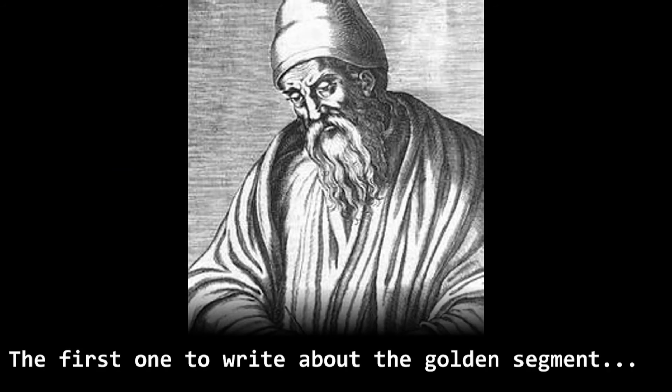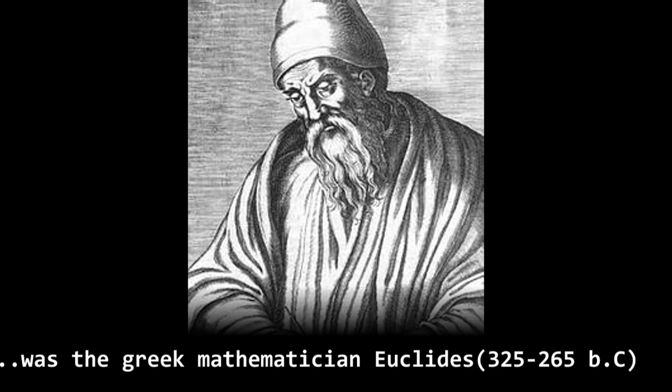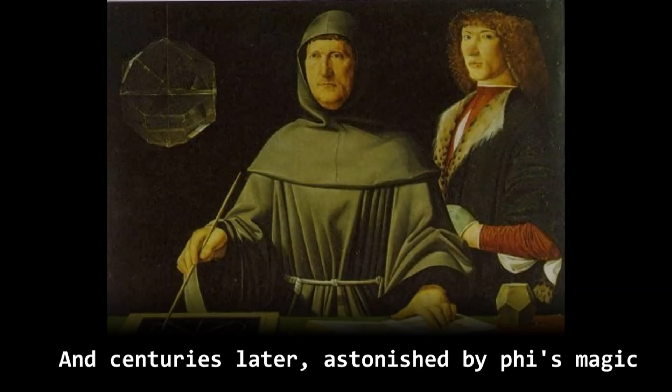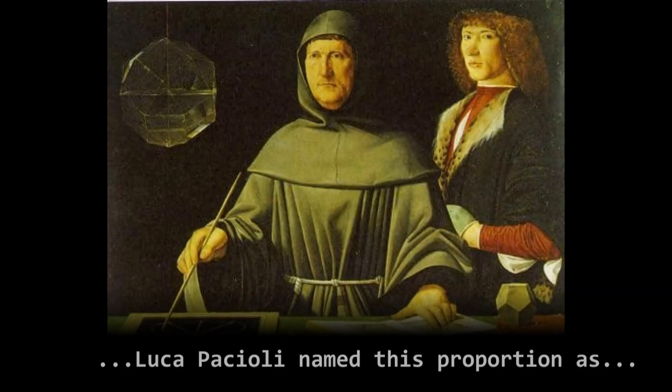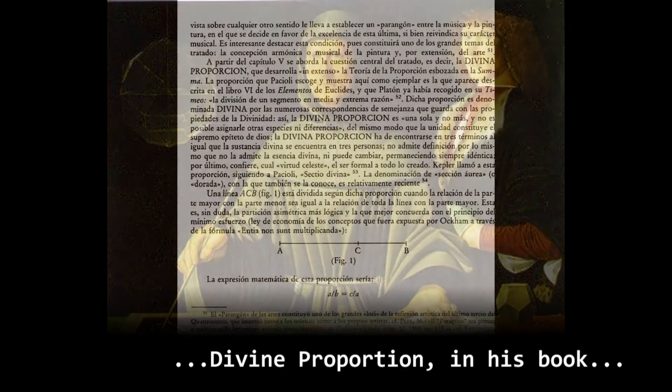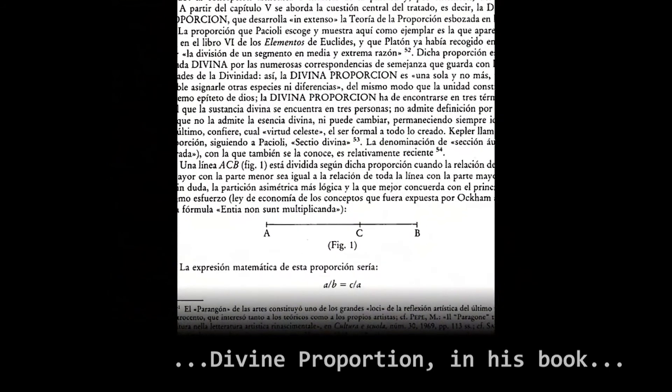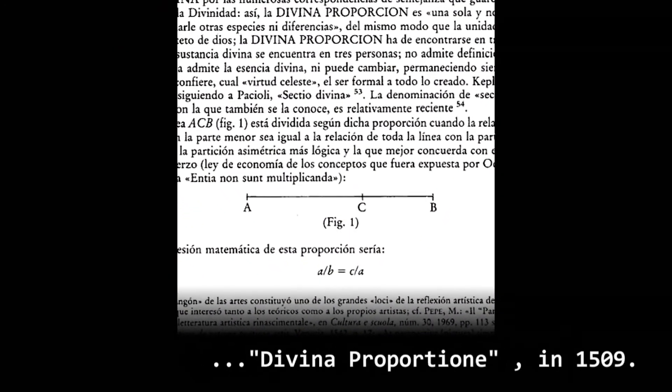The first one to write about the golden segment was the Greek mathematician Euclid, in his book Elements. Luca Pacioli called it Divina Proportione in 1509.